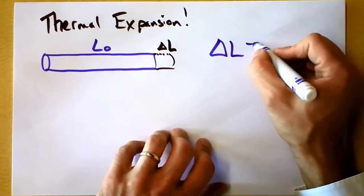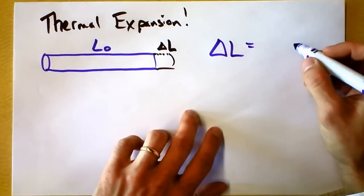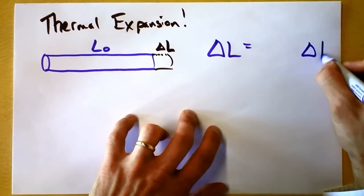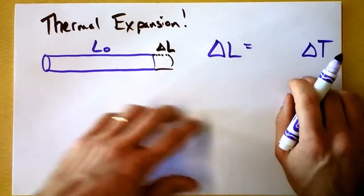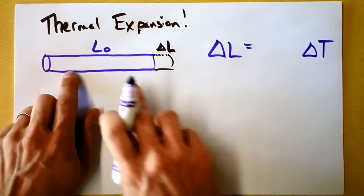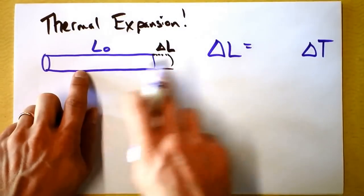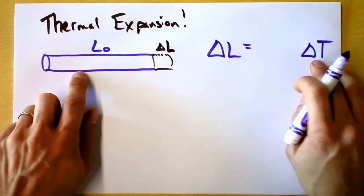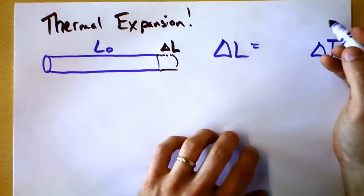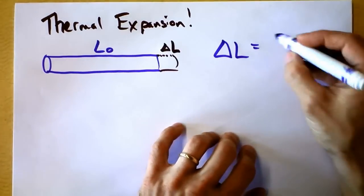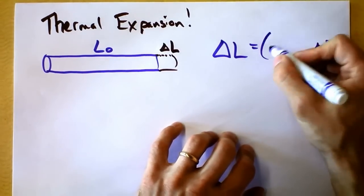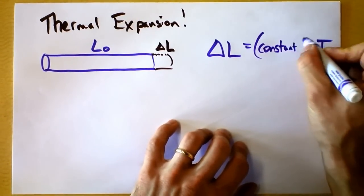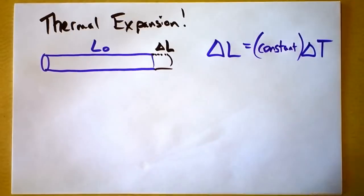Change in length is going to depend on the change in temperature. If I change the temperature by a little bit, the length changes a little bit, and if I change the temperature by a lot, the length changes by a lot. So it depends on some constant too, though I don't know yet what that constant might be.